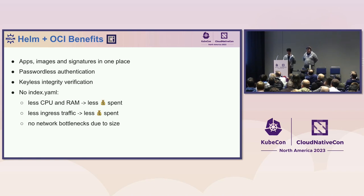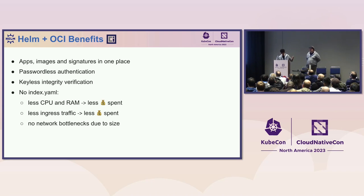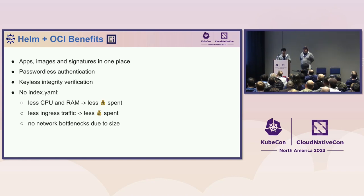What are the benefits when you use Flux, Helm, and OCI together? First, you have all your apps, images, and signatures in one place — your container registry. You don't need 10 different tabs. You get passwordless authentication and keyless integrity verification. Most importantly, you can get rid of your index.yaml, which means less CPU and RAM usage — translating into cost efficiency. You also spend less on egress traffic and avoid network bottleneck issues like Bitnami experienced.